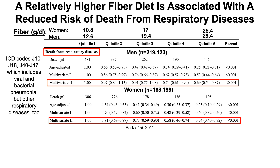A similar effect is present for women. Women that consumed the lowest amount — about 10.8 grams per day, quintile 1 — showed that quintile 2 had a 19% reduced risk of death from respiratory diseases. Every quintile above that had a further reduction: quintile 3, 27% down; quintile 4, 42% down; quintile 5, 46% down. The highest fiber group at about 25 grams per day versus about 11 grams per day significantly reduced risk of death from respiratory diseases.